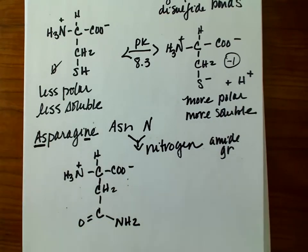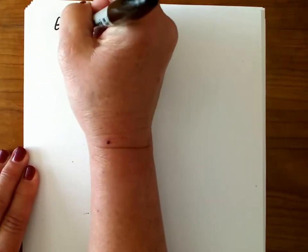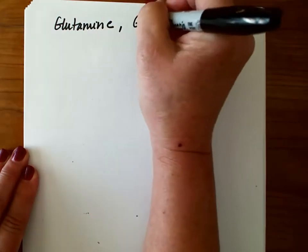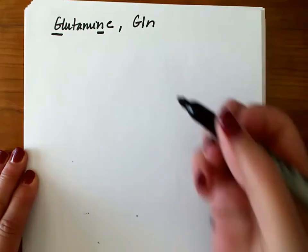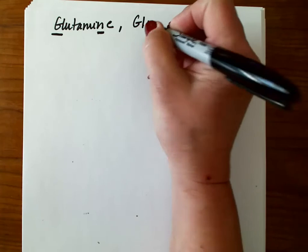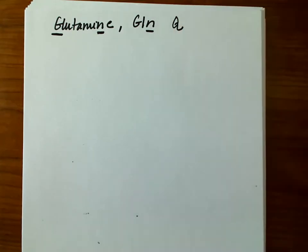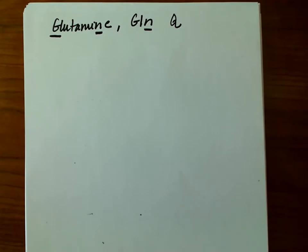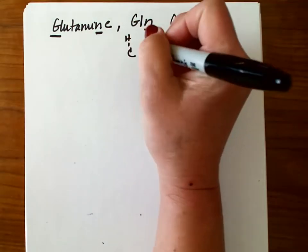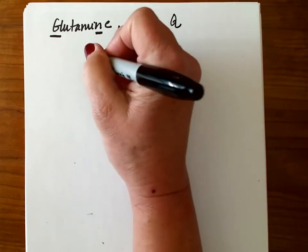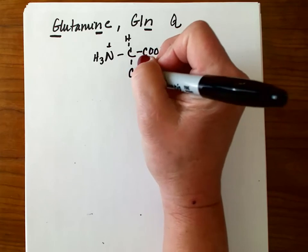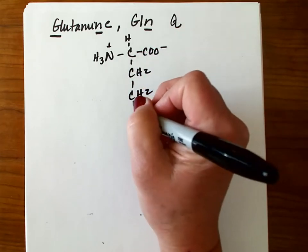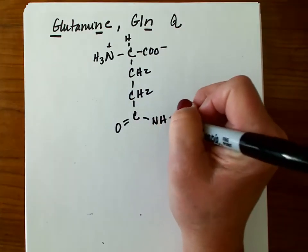The last one in this group is glutamine — GLN, Q. The single letter Q — you'll have to come up with something to remember that on your own. The only difference between asparagine and glutamine is the number of methylene groups between the alpha carbon and the amide group — and there are two of those. So two methylenes and then the amide group. And that is glutamine.